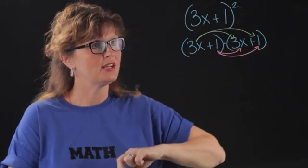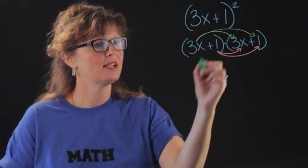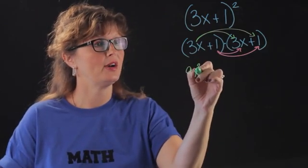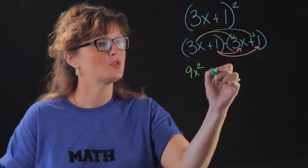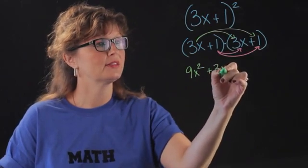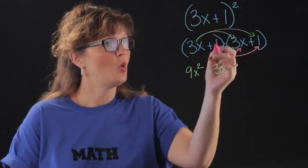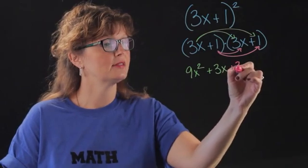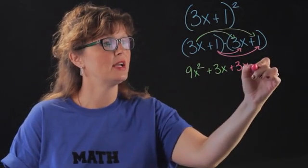So we do this and we have 3x times 3x is 9x squared. 3x times 1 is 3x. 1 times 3x is 3x and then 1 times 1 is 1.